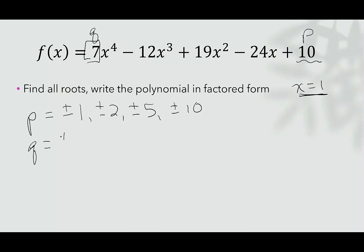q has factors ±1, ±7. When I put p over q together, I have ±1/1, which is 1, 2/1, which is 2, 5/1 is 5, 10/1 is 10. Then I'm going to divide by 7, so ±1/7, ±2/7, ±5/7, and ±10/7.